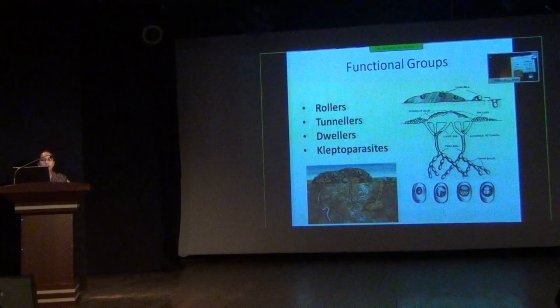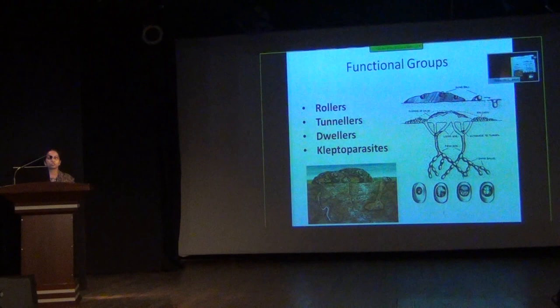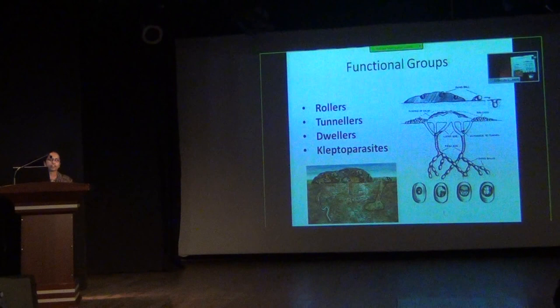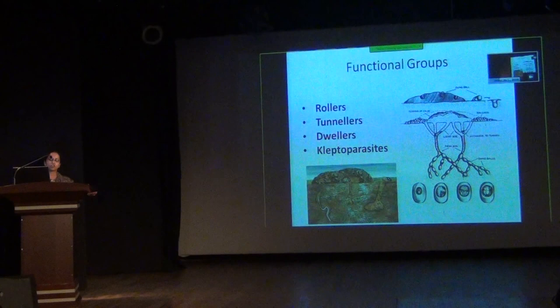The functional groups of the true dung beetles are the rollers, tunnelers, dwellers, and kleptoparasites — classified according to the way in which they translocate the resource, that is, the dung. They are also found in carcasses and decomposing substances and fungus. Rollers take away the dung a few meters away and bury it under the soil.